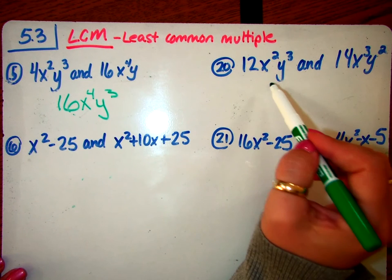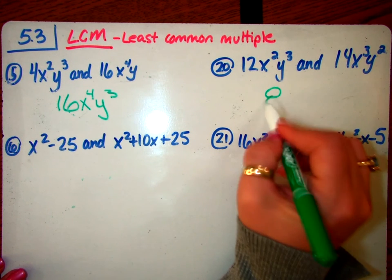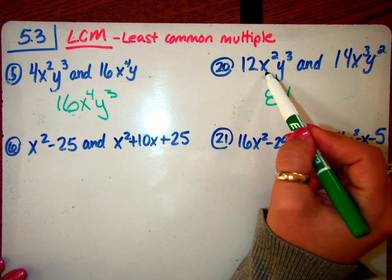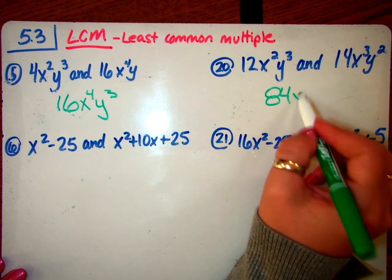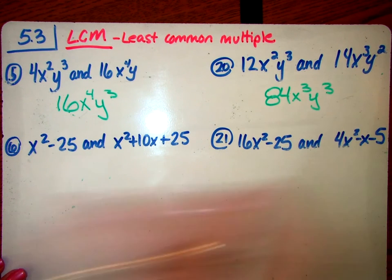So over here, you may need a calculator, and it may take a little longer, but the first number you're going to hit is 84. Then you're going to say, x's, which one has the higher one? The cube. Y's, which one is higher? The cube. And that is going to be your answer.